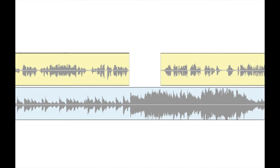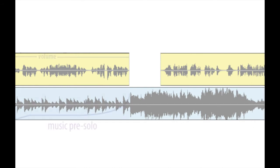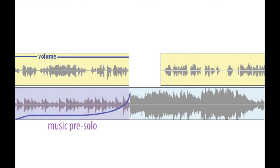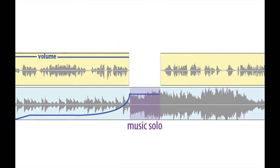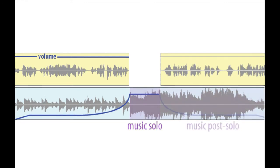In a typical underlay, there is a music pre-solo that fades in behind the speech. Then, when we reach the emphasis point, the music changes, the speech pauses, and the music solo plays at full volume. Finally, the music post-solo fades out as the speech resumes.